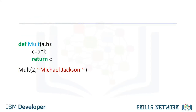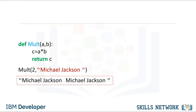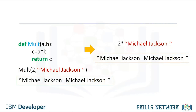If you accidentally multiply an integer with a string instead of two integers, you won't get an error. Instead, you will get a string and your program will progress, potentially failing later because you have a string where you expected an integer. This property will make coding simpler, but you must test your code more thoroughly.